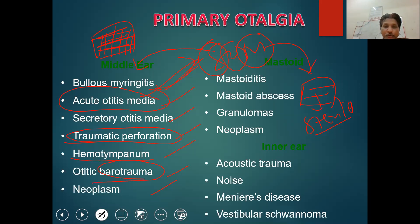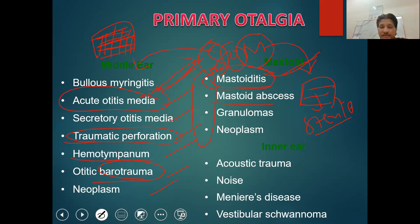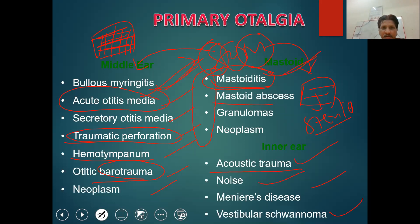In the mastoid segment, common examples that can cause otalgia include mastoiditis — an extension of acute otitis media involving the mastoid air cells. The mastoid is a large air-filled cavity posterior to the middle ear. Acoustic trauma and cholesteatoma itself rarely cause pain.